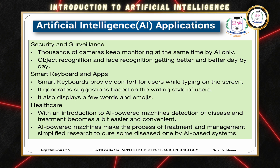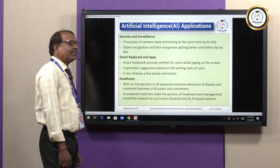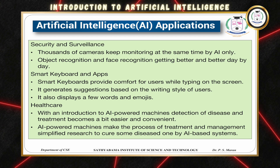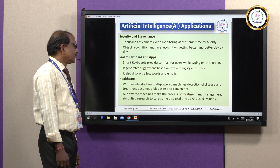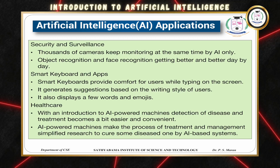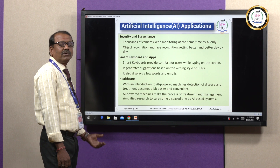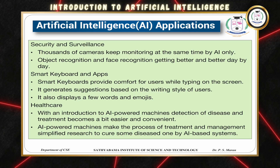For security and surveillance, thousands of cameras keep monitoring at the same time using artificial intelligence techniques, including object recognition and face recognition, which are getting better day by day. Smart keyboards provide comfort to users while typing on screen — they generate suggestions based on the writing style of users and also display words and emojis. In healthcare applications, artificial intelligence uses powered machines to find out the disease of a human being, making treatment easier and more convenient for doctors.